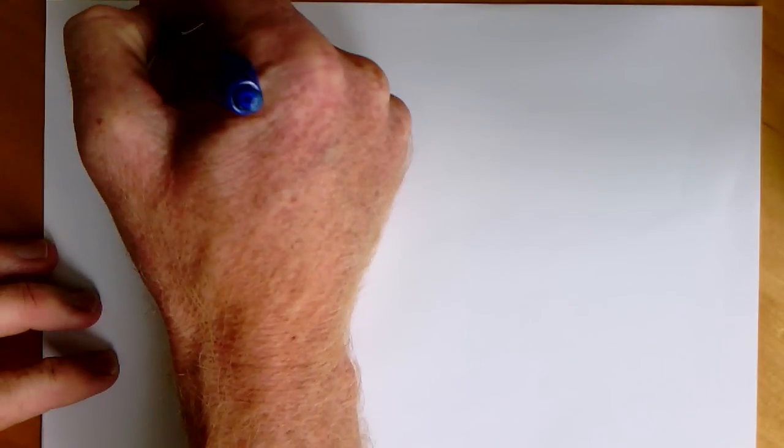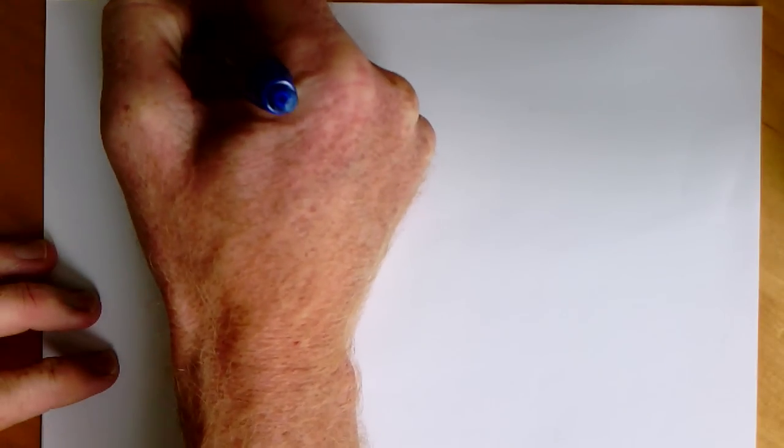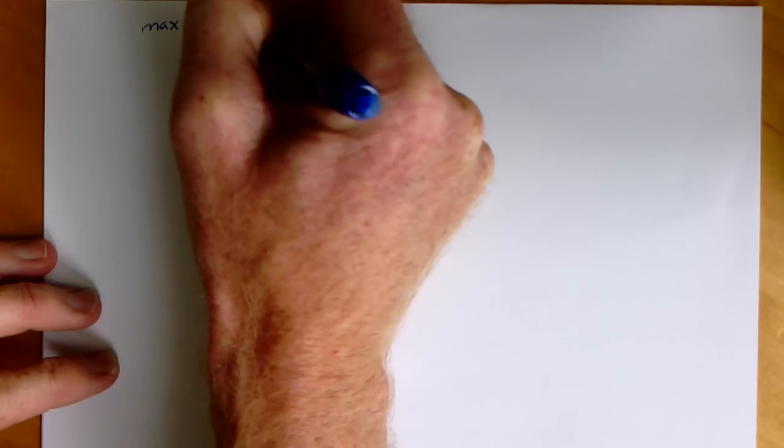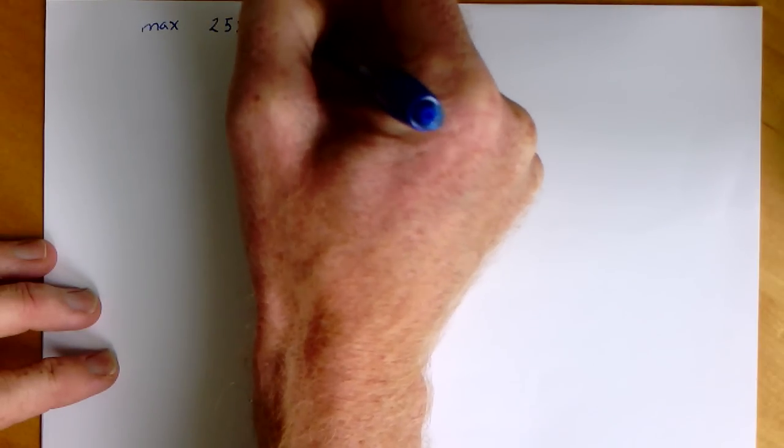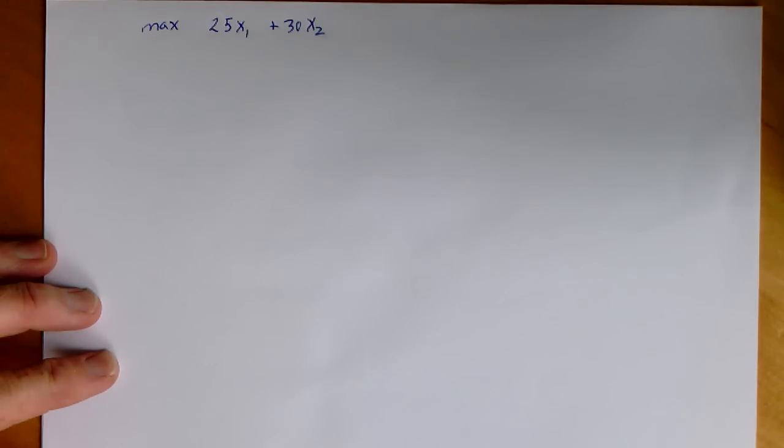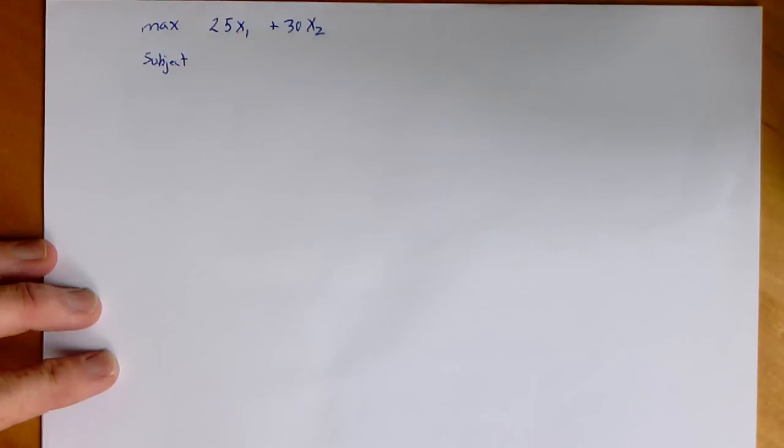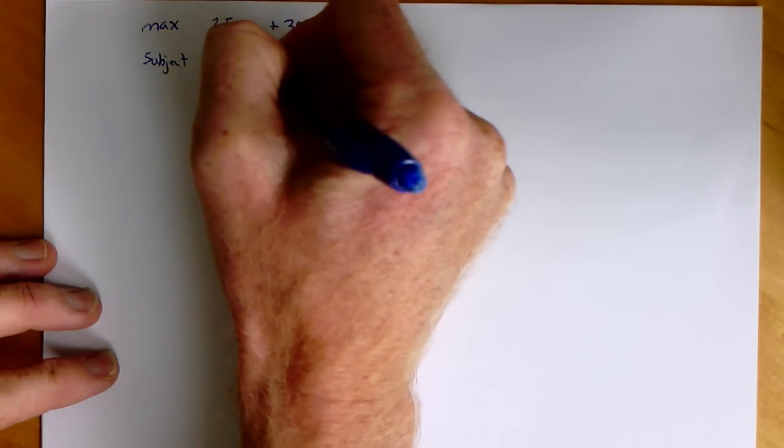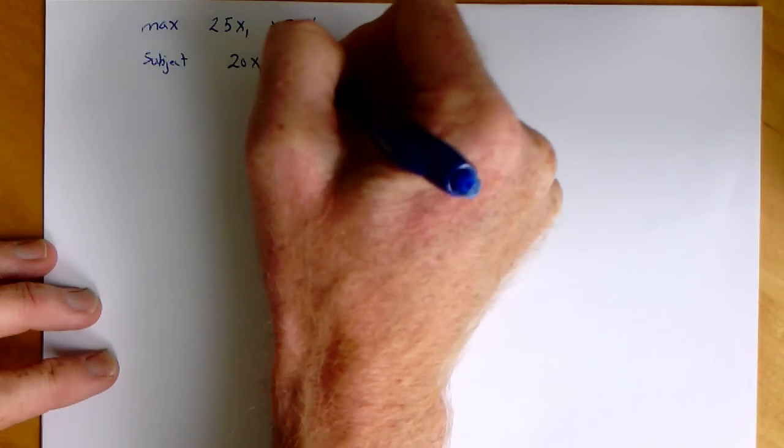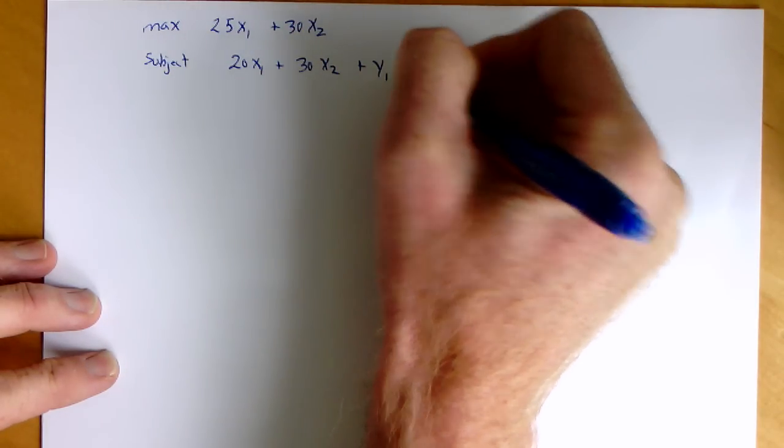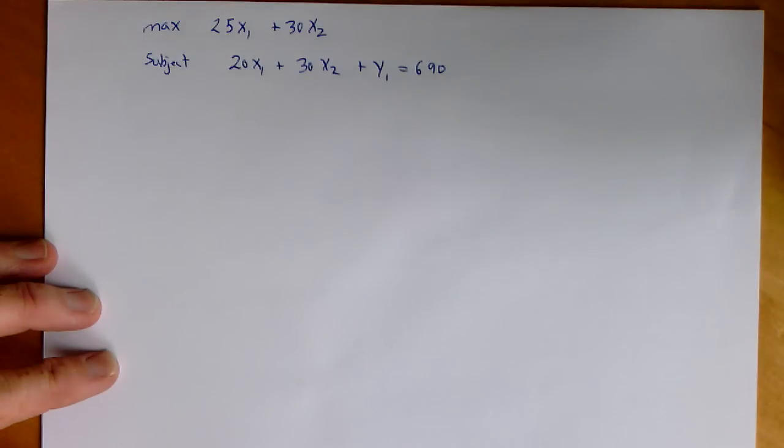Just to remind you, the problem is to maximize a function, in this case a function of two variables, subject to some constraints. This is the carpenter's problem. The initial constraints were inequalities, but through the introduction of slack variables, these have been converted into equality constraints.